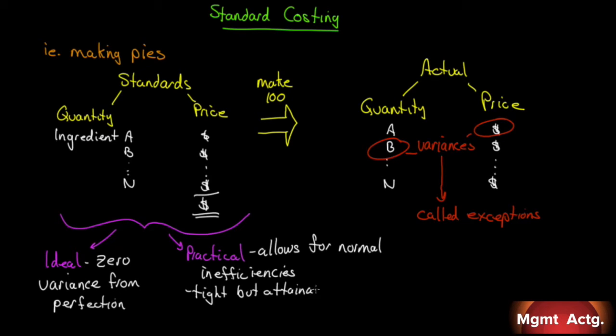Saying that you were over-budget by $80 or under-budget by $1,000 — well, what do I fix? Here, we would know: it's the quantity or it's the price.